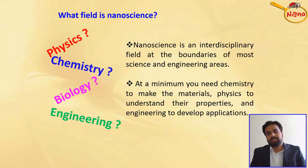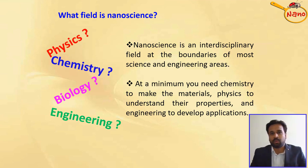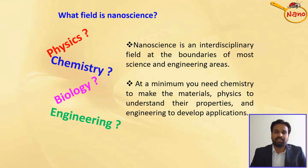Nanoscience is an interdisciplinary field at the boundaries of most science and engineering areas. At the minimum, you need chemistry to make or produce these materials, then physics to understand the different properties, and engineering to use those properties and fabricate devices. That means you need chemistry, physics, and engineering together to develop nanoscale devices.